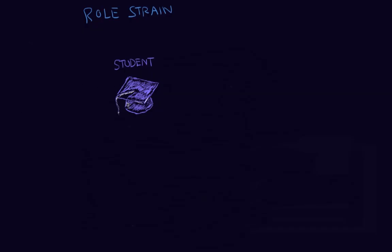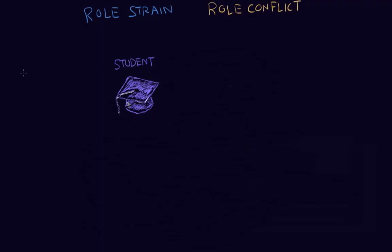On the other hand, there's what's called role conflict. This refers to the conflict between the roles of two or more social statuses — not within an individual status like before. Let's take a look at this guy right here and look at a few different scenarios to understand role conflict.